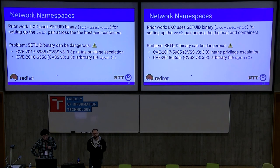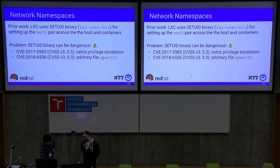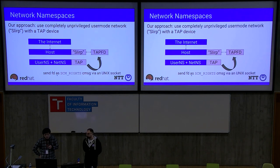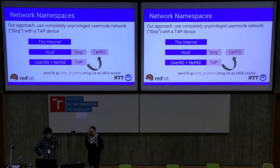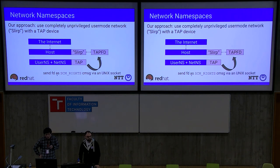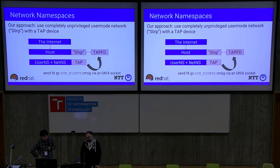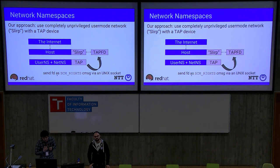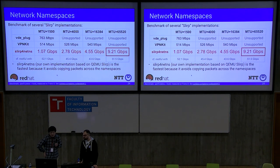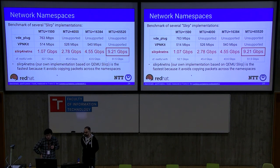Prior work by the LXC folks used a binary called lxc-user-nic for setting up virtual Ethernet pairs across host and containers, but that setuid binary has had two CVEs so far. Our approach is to use slirp4netns, a completely unprivileged user-mode network stack. Inside the namespace we create a TAP device, send the file descriptor of that TAP device over a Unix socket to the parent namespace, and the parent has a slirp process that provides TCP/IP networking to the TAP file descriptor.